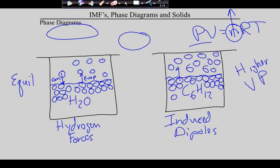Open your books to page 1058. This is a vapor pressure table for water. What else influences vapor pressure besides the strength of IMFs? Temperature. As we heat up the water, these molecules move faster, it's easier for them to become a gas, and it's harder for them to recondense as a liquid — so the vapor pressure goes up.